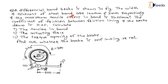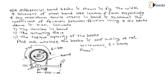The width and thickness of the steel band are 100 mm and 3 mm respectively. For this steel band, width W is 100 mm and thickness T is 3 mm. The maximum tensile stress in the band, σ_T_max, is given as 50 N per mm square.